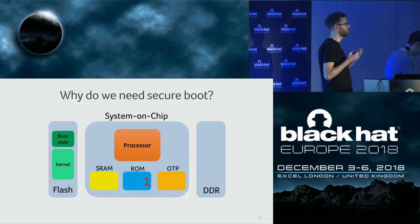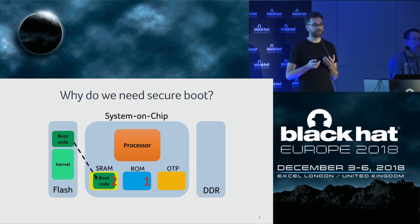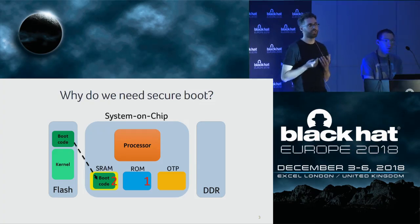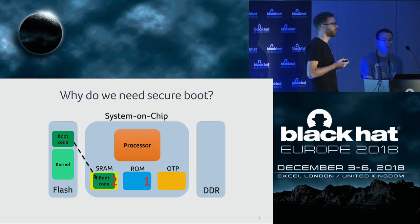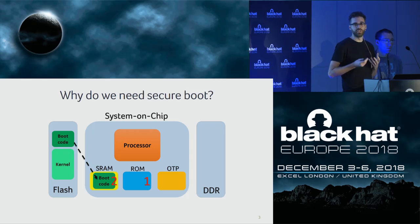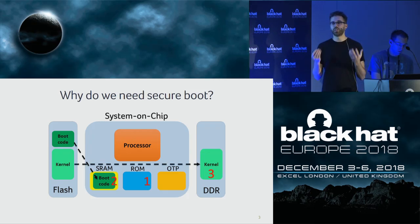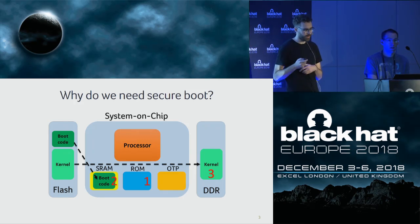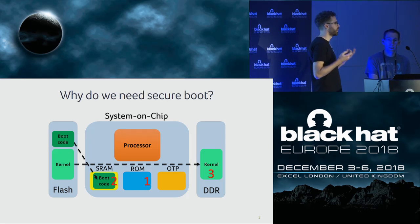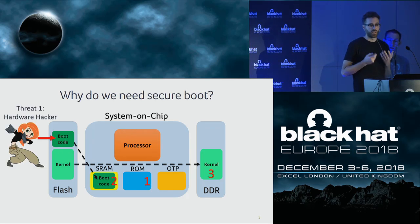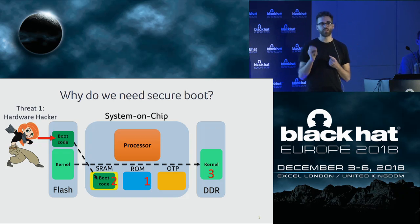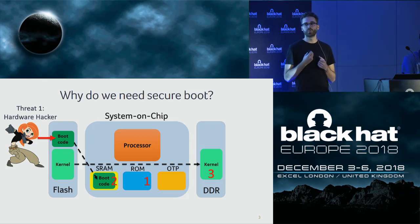Whenever you turn the device on, a piece of code is executed first, often stored in a read-only memory — the so-called ROM. Its main responsibility is loading the first stage from external flash into internal memory, since the external DDR is not yet initialized. It then initializes the DDR so the processor can load additional stages from external flash into DDR and execute from there. This design has a threat: an attacker with physical access can make small modifications to flash contents to take control of the device.